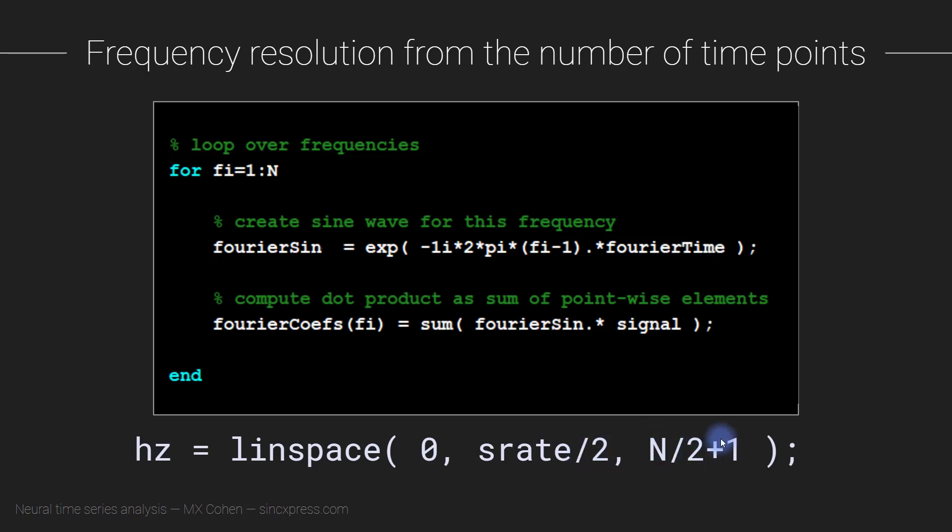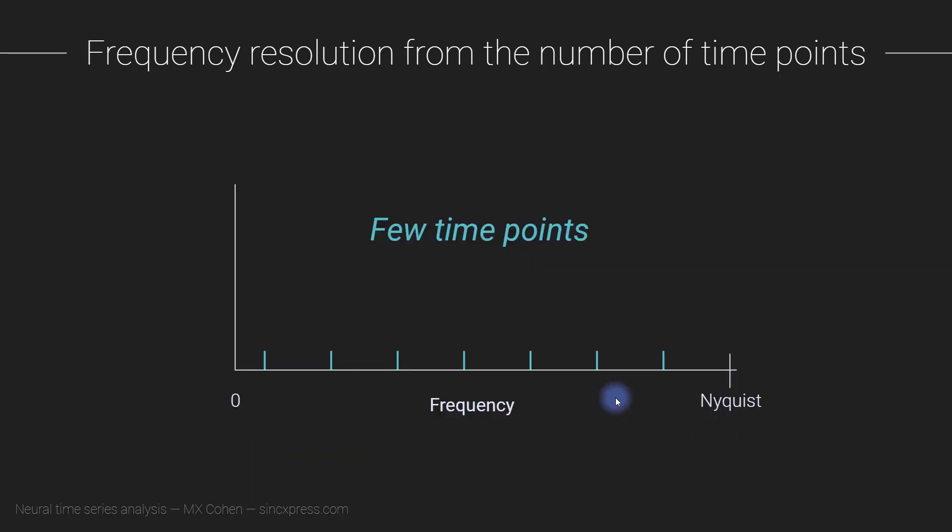The implication is that if you have a signal with relatively few time points, the frequency bounds are fixed at the low end by zero and at the upper bound by the Nyquist frequency.